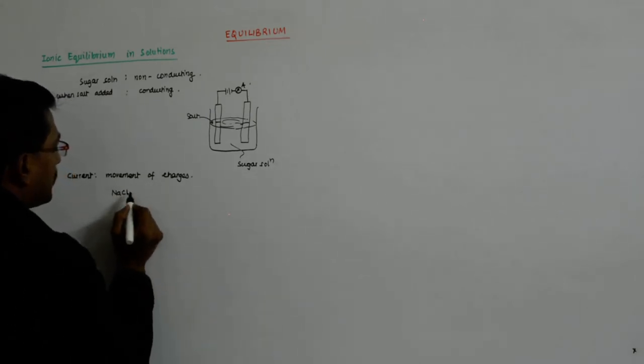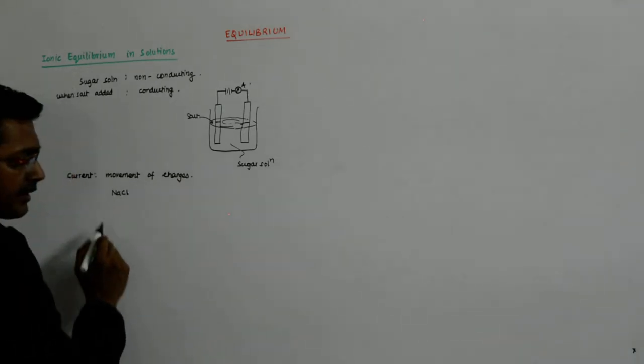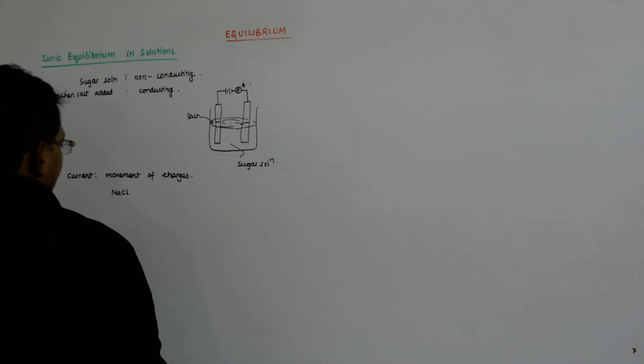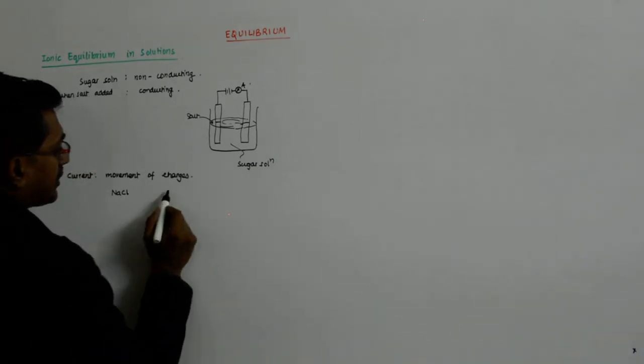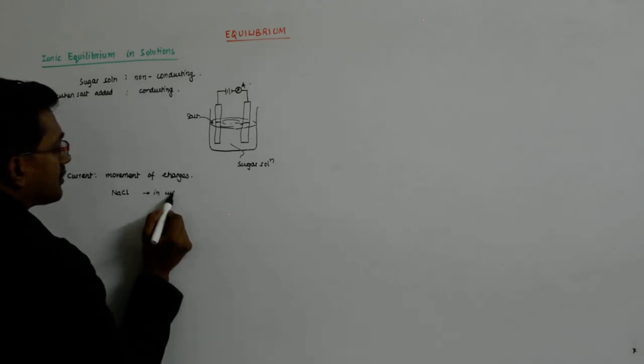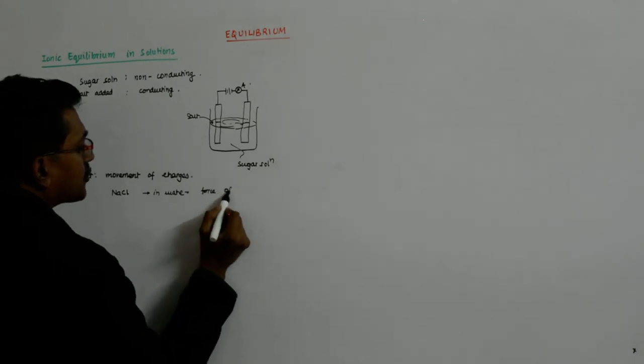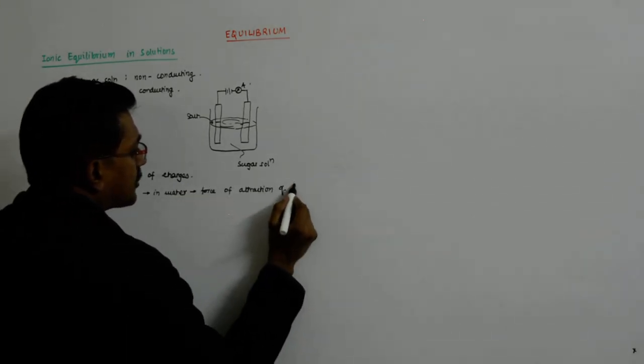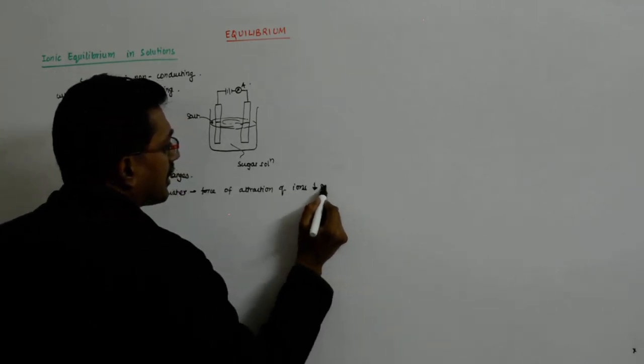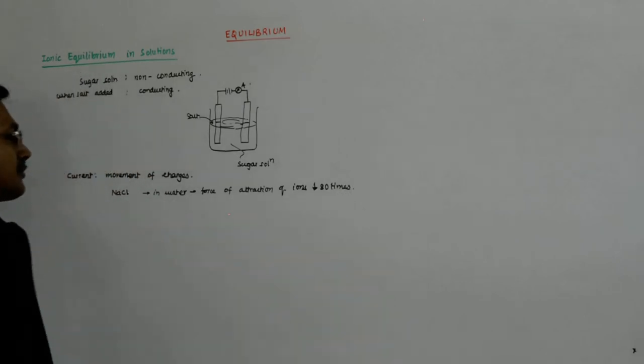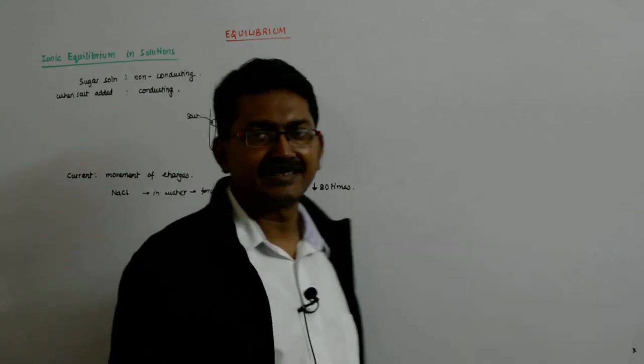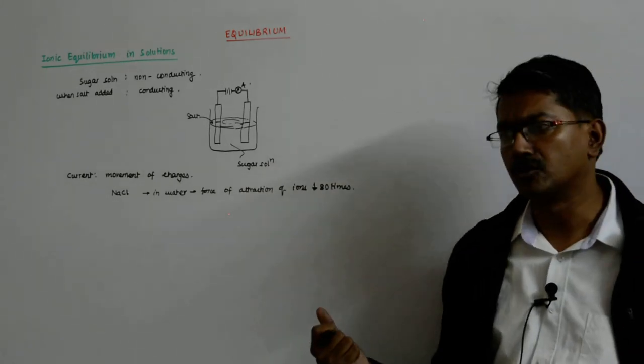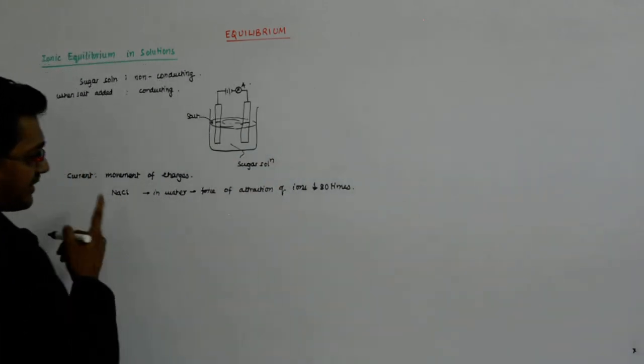Now, if this is NaCl, the moment you pour it into water, the dielectric constant of water is about 80. So immediately the forces of attraction in water, what happens? The force of attraction of the ions reduces 80 times. On top of that, water itself is a polar molecule. So what it does is it is able to pull the ions on its own, due to its own dipole moment. Due to this, NaCl dissolves in water.